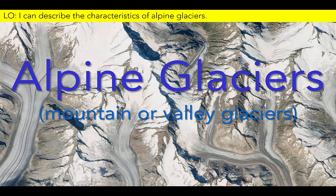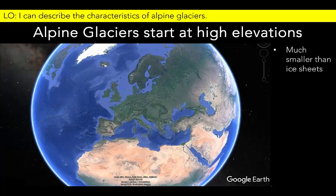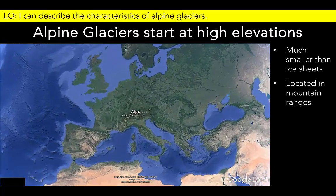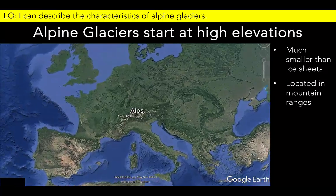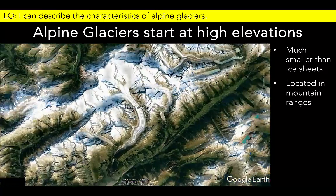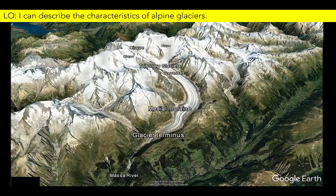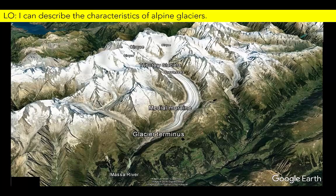Outside of polar regions, alpine glaciers form at high altitudes in modern mountain ranges on every continent except for Australia. Alpine or valley glaciers typically begin in a permanent snow field at high elevations. For example, the Aletsch Glacier is the longest glacier in Europe and begins at an elevation of just under 4,000 meters in the Swiss Alps. Let's take a closer look at some of the features of this glacier.